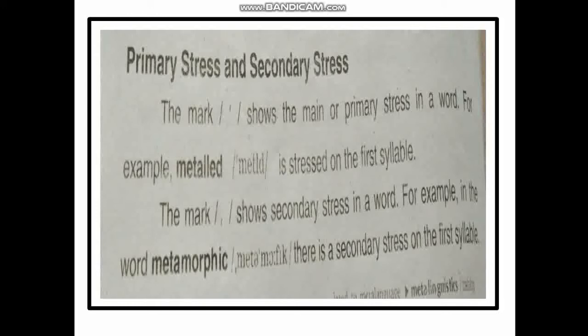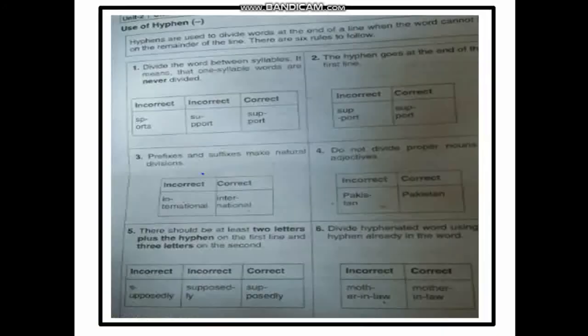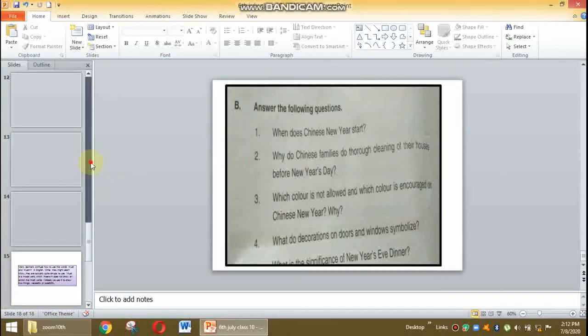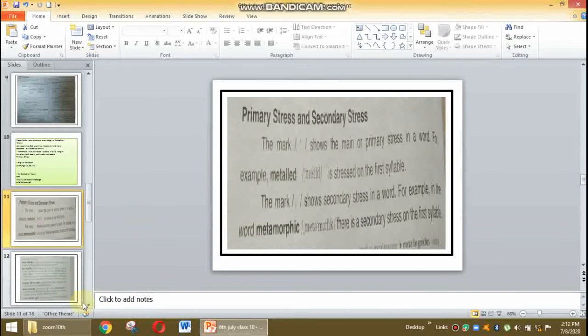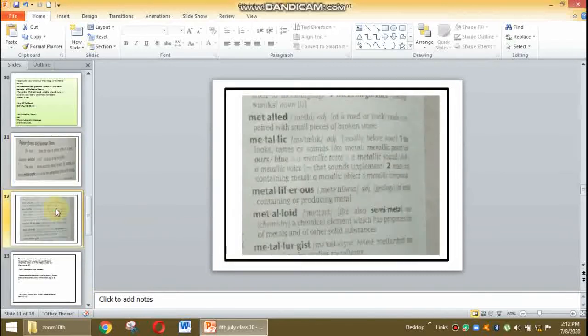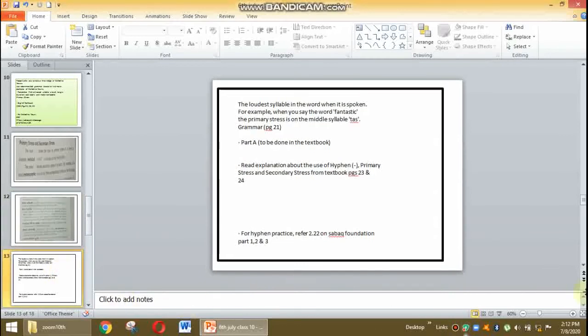A syllable is a word unit produced with a single chest pulse. For example, the word 'supposedly' is broken into syllables — each unit produced with a single chest pulse is called a syllable.